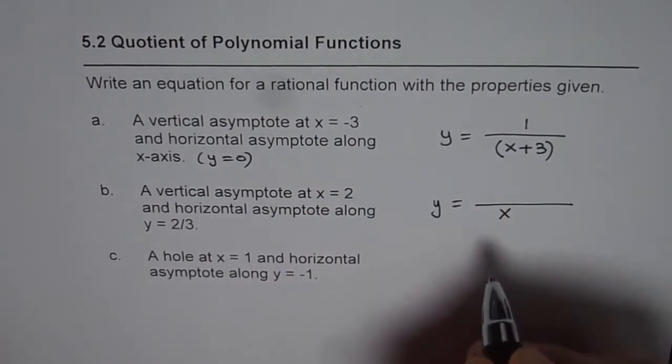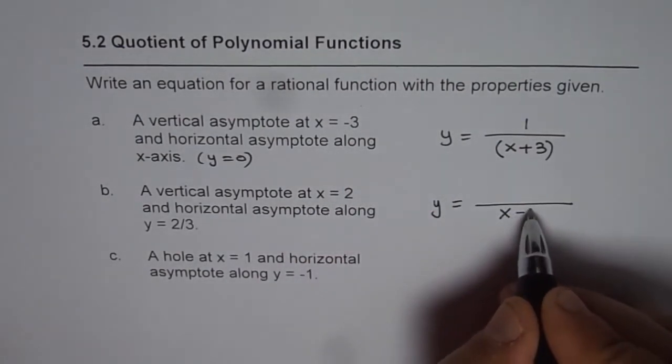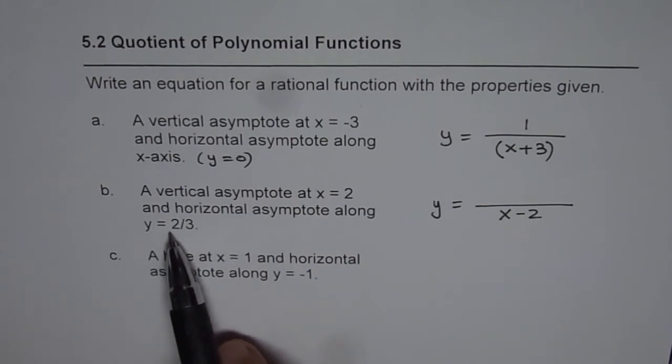That means we can write x minus 2 in the denominator. So that gives us vertical asymptote at x equals 2. Now horizontal asymptote is along y equals 2 over 3.